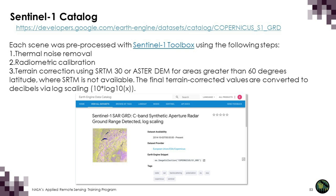All Sentinel-1 data on Google Earth Engine is analysis-ready — the only thing you have to do is apply a speckle filter. The following steps have already been applied using the SNAP toolbox: thermal noise removal, radiometric calibration, and terrain correction using a digital elevation model. The data are in dB (logarithmic, decibel values representing sigma nought backscatter), with 10-meter resolution and the interferometric wide swath mode at two polarizations: VV and VH.